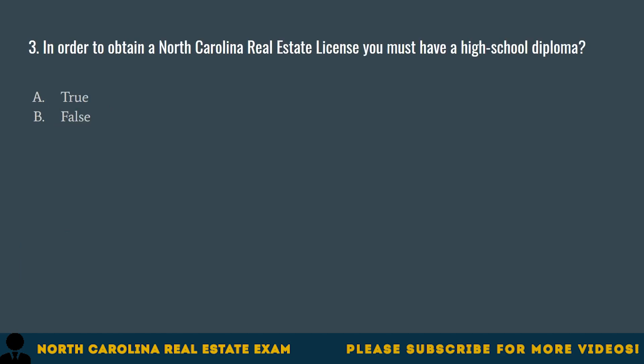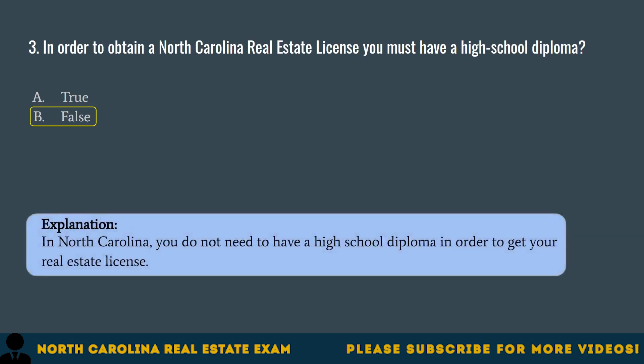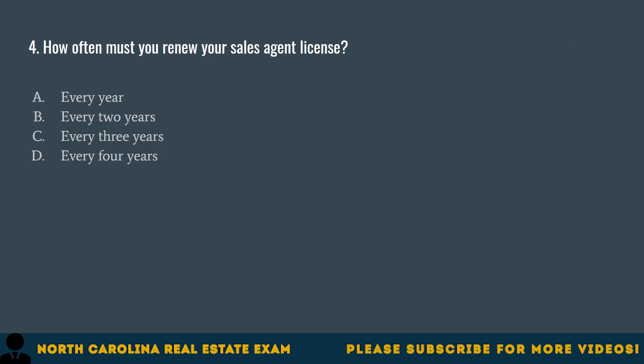Question 3. In order to obtain a North Carolina Real Estate License, you must have a high school diploma. A. True. B. False. The correct answer is B. False. In North Carolina, you do not need to have a high school diploma in order to get your real estate license.